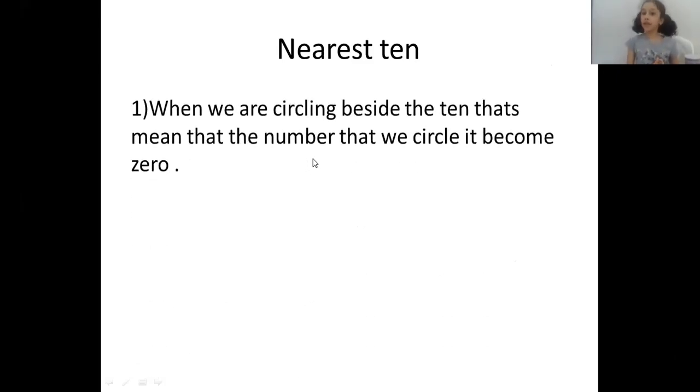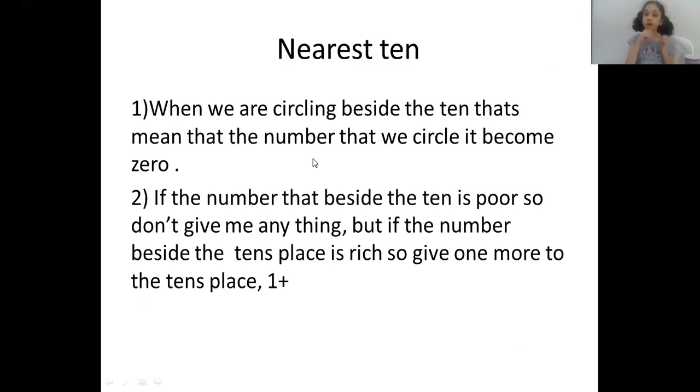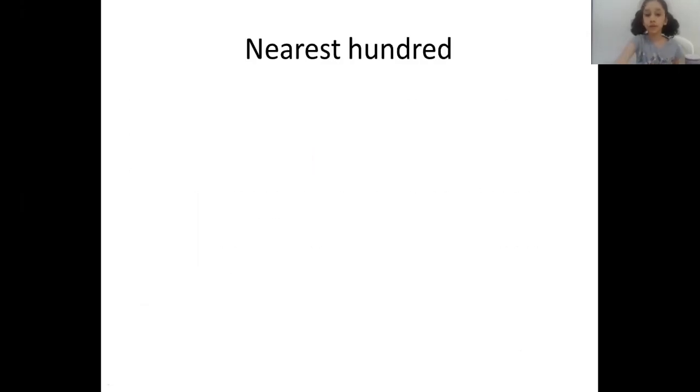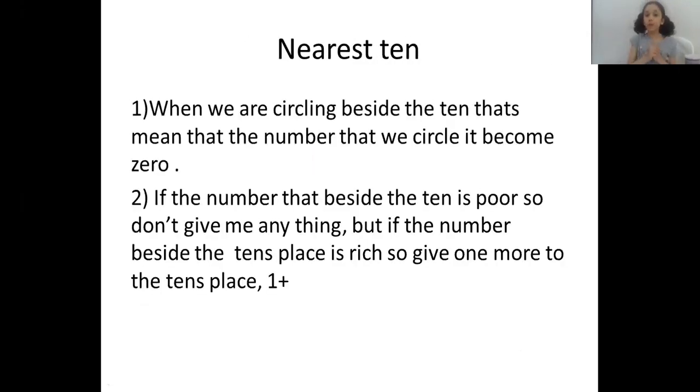When we are rounding to the nearest ten, that means that the number we circle becomes zero. If the number beside the tenth is poor, don't give anything. But if the number beside the tenth place is rich, give one more. So we will give one more to the tenth place, plus one.